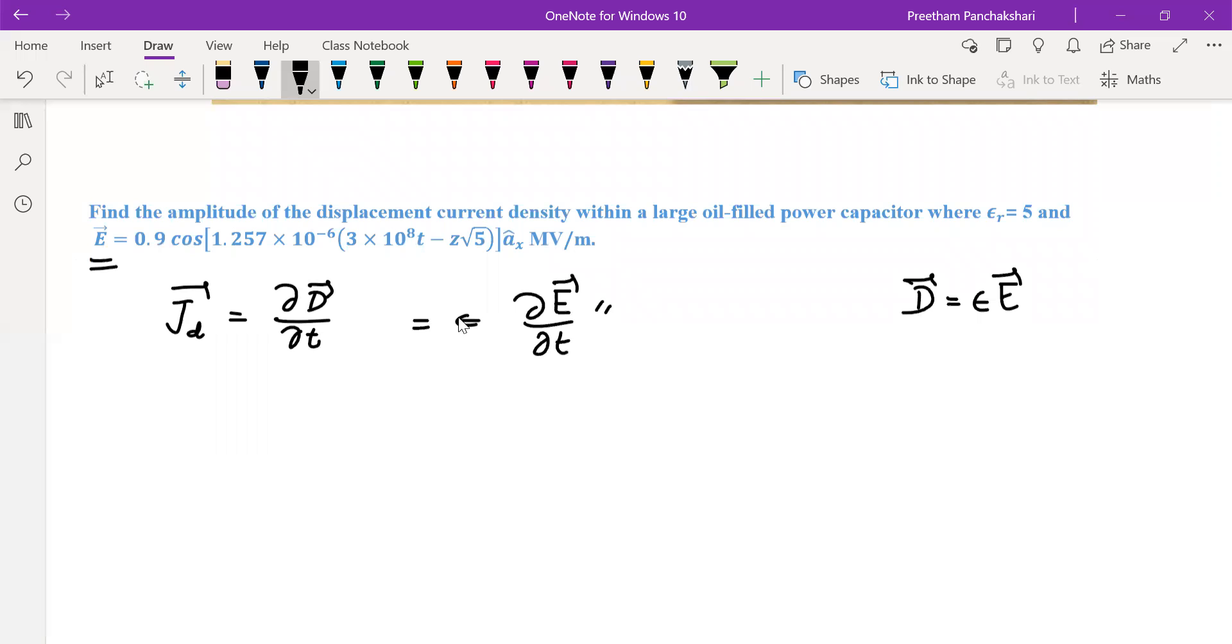Then we have to multiply with epsilon. So no Maxwell's equation is required for this problem because Maxwell's equations are the relations between electric field and magnetic field. When you want to find one from the other, we need Maxwell's equations. Otherwise, not required at all.